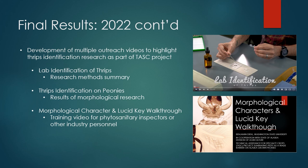In order to highlight and distribute the thrips identification research completed during the TASC grant, several outreach videos were created and will be made available online. The first is titled 'Lab Identification of Thrips' and covers the laboratory methods utilized during the project. The second video is titled 'Thrips Identification on Peonies' — this is the video you are currently watching — and it mainly covers the results of our morphological research while also briefly covering the thrips life cycle and how these insects damage peony plants. Finally, the third video is titled 'Morphological Characters and Lucid Key Walkthrough,' which explains many of the most important morphological structures used to identify thrips and includes a video walkthrough showing how to use the lucid key. This video will be helpful for any person interested in using the keys generated as part of the TASC grant to identify thrips collected from peonies grown in Alaska. Thank you for watching.